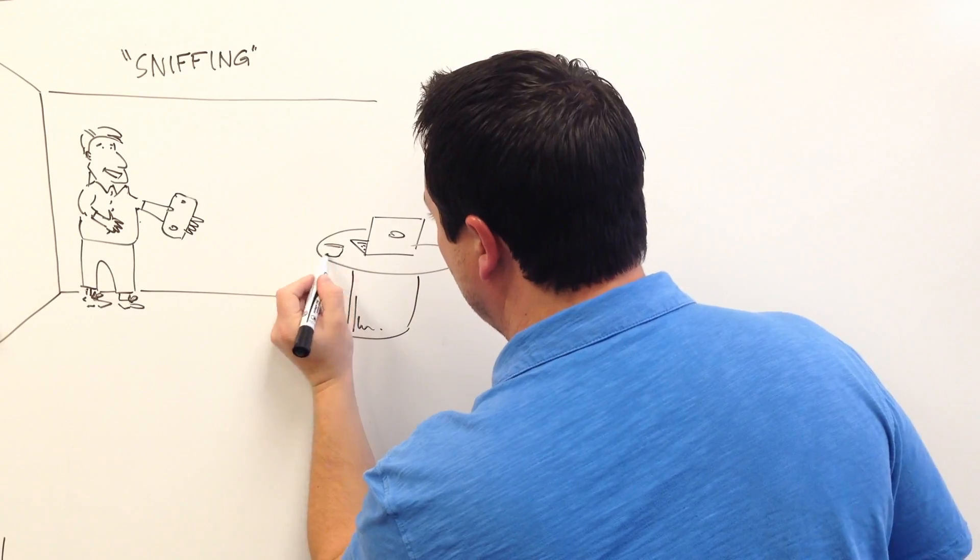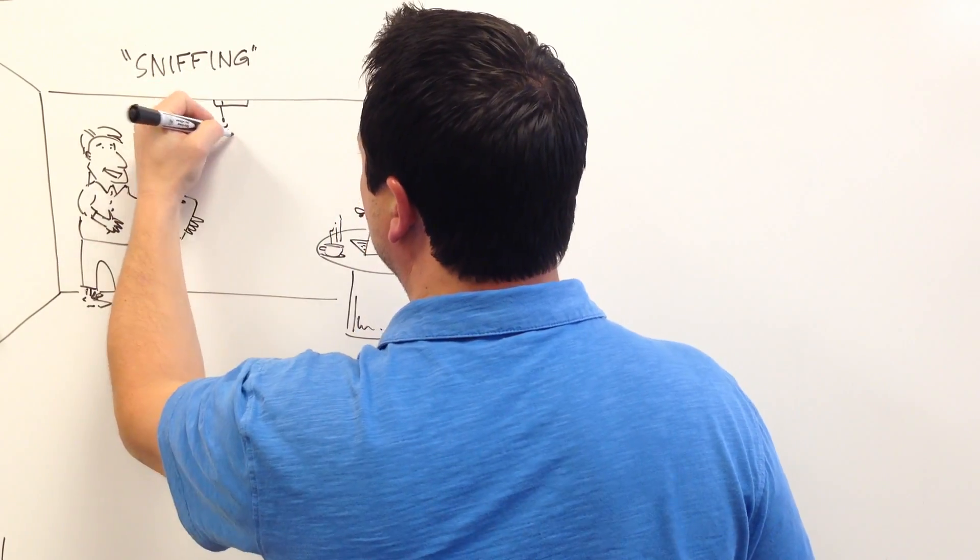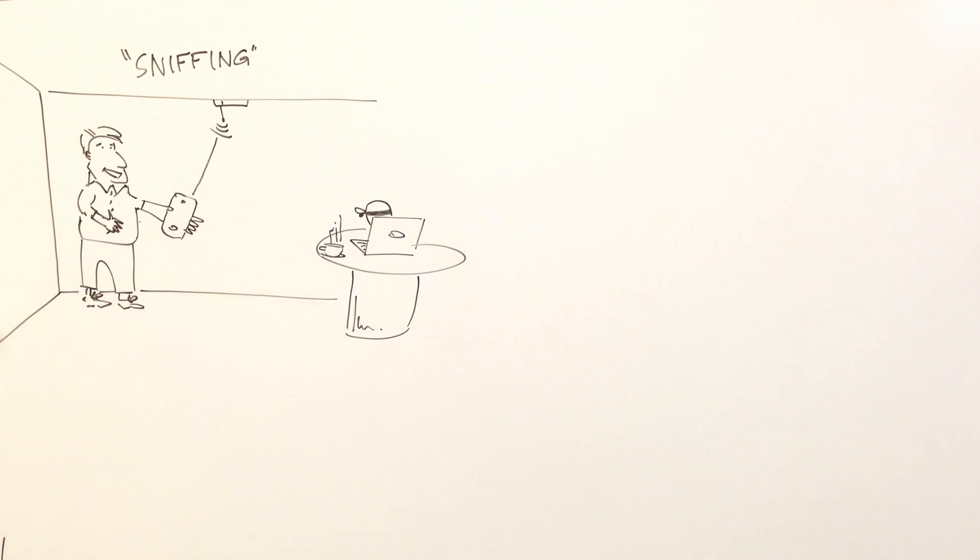The attacker will position himself within range of the wireless access point you're connected to and use a program called a sniffer to capture information. The attacker can do this without being noticed.